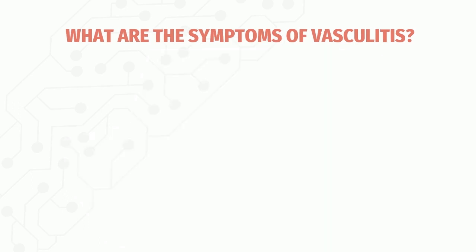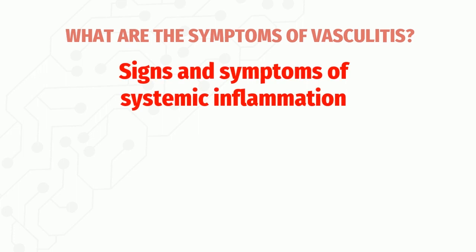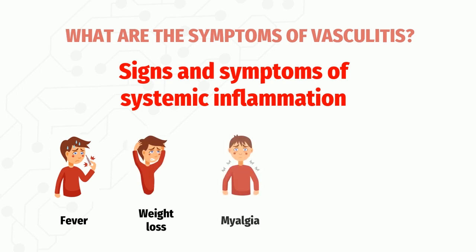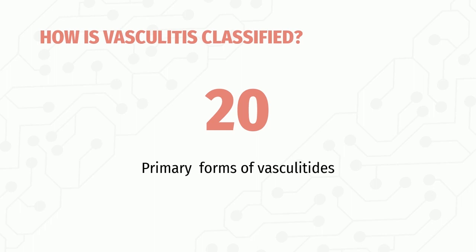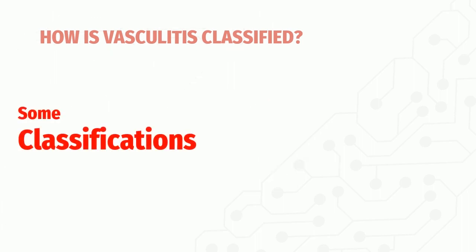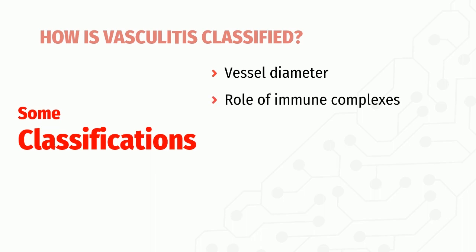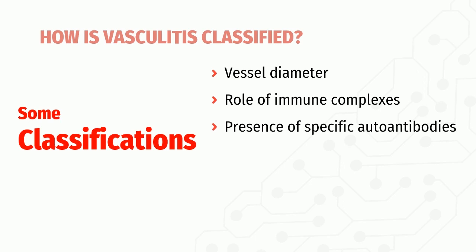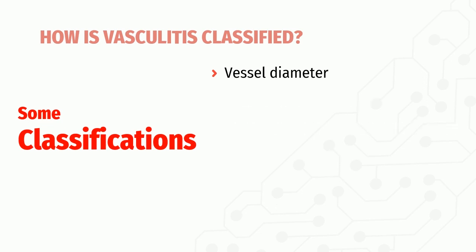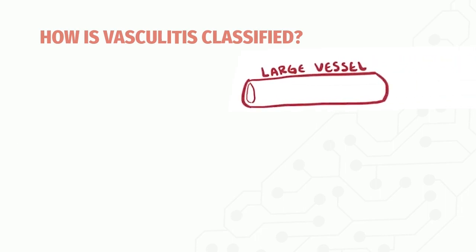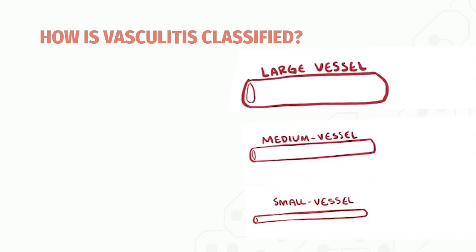Besides findings related to the affected tissue, there are usually signs and symptoms of systemic inflammation such as fever, weight loss, myalgia, joint pain, and fatigue. Vasculitis is classified in many ways — by vessel diameter, role of immune complexes, presence of specific autoantibodies, granuloma formation, organ specificity, and population demographics. Here we classify types of vasculitis according to vessel size into diseases affecting large, medium, and small arteries.